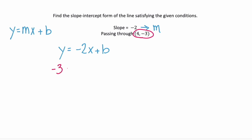Our y value is negative 3 and our x value is 4. We have negative 3 equals negative 8 plus b.